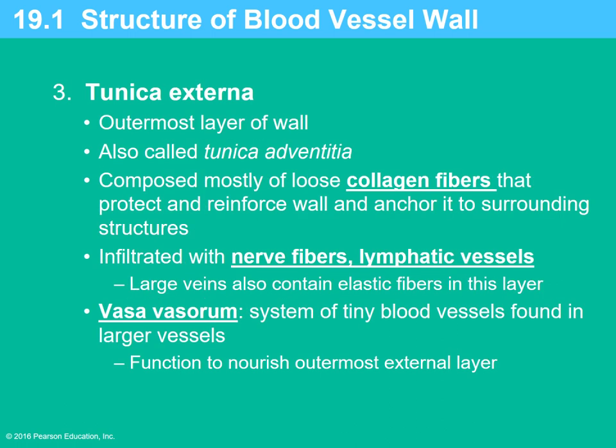The tunica externa is the outermost layer, sometimes called the tunica adventitia. It is mostly collagen fibers that help protect and reinforce the vessel wall and anchor it to surrounding structures so the blood vessel doesn't slide around. It is usually innervated with nerve fibers, and lymphatic vessels also run in parallel with it.